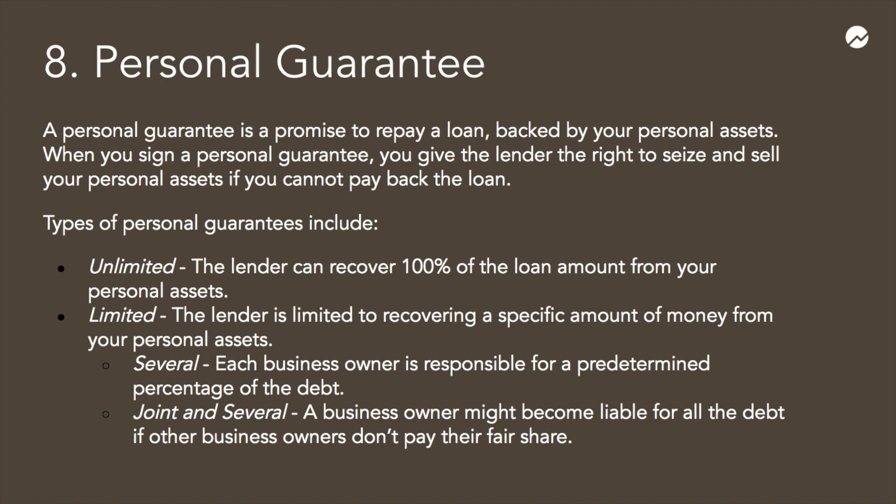Let's say you take out a $50,000 business loan but your business doesn't do as well as you expected and you're unable to make your payments. If you signed a personal guarantee, the lender can come after your personal assets such as your home, car, or personal bank accounts to recover the balance. There are two major types of personal guarantees: unlimited and limited. In an unlimited personal guarantee, the lender can recover 100% of the loan amount from your personal assets. In a limited personal guarantee, the lender is limited to recovering a specific dollar amount from your personal assets.